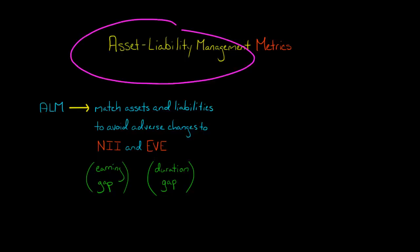The goal of asset liability management is to match the assets and liabilities of a bank so you don't have any adverse changes to the bank's net interest income or the economic value of the bank's equity.